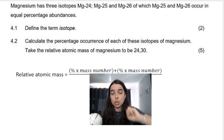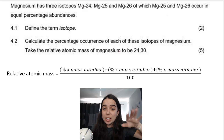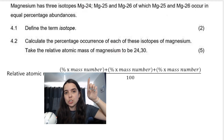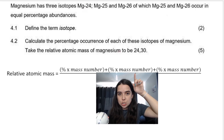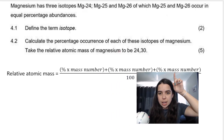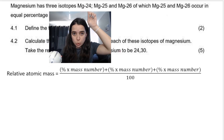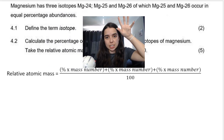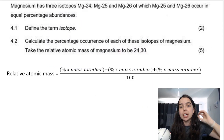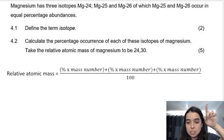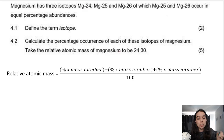What I've done is extended the formula so each bracket is for each isotope: Mg24, Mg25, and Mg26. The mass numbers are 24, 25, and 26. We need to work out the percentage abundances, so substituting into the formula, I have the 24.3 which is the relative atomic mass.